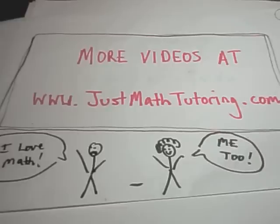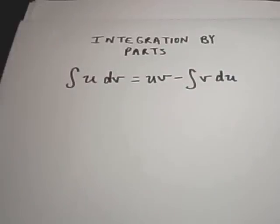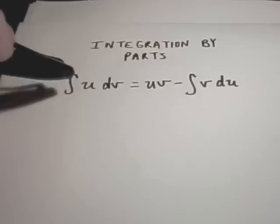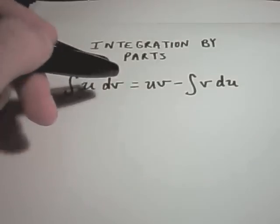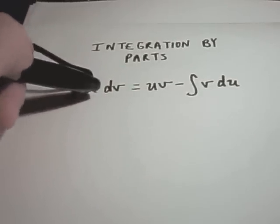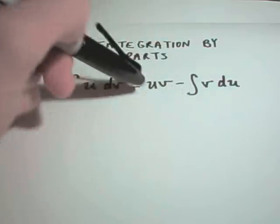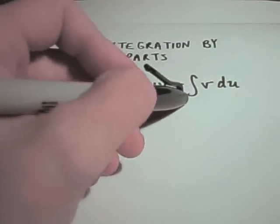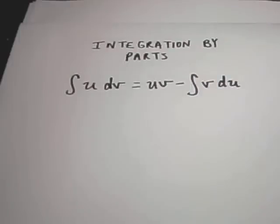Alright, in this video I'm going to do some integration by parts. The integration by parts formula says you're basically going to start with one integral, you're going to call one part of it u, one part of it dv, and then you're going to use a re-labeling to come up with a new integral. The idea is hopefully this new integral that you end up with is going to be easier to deal with.